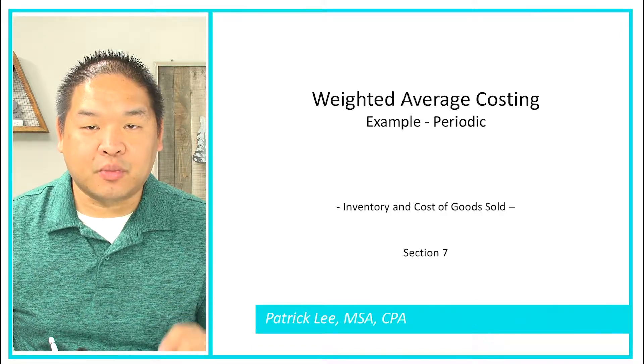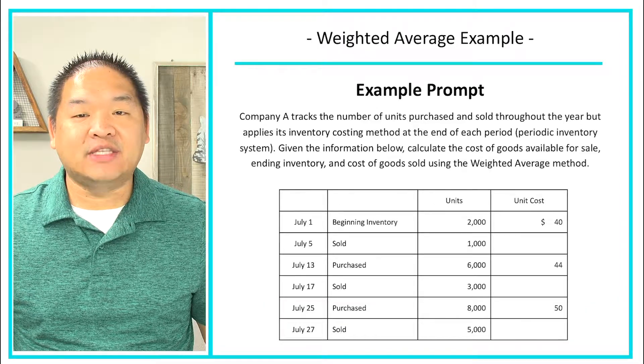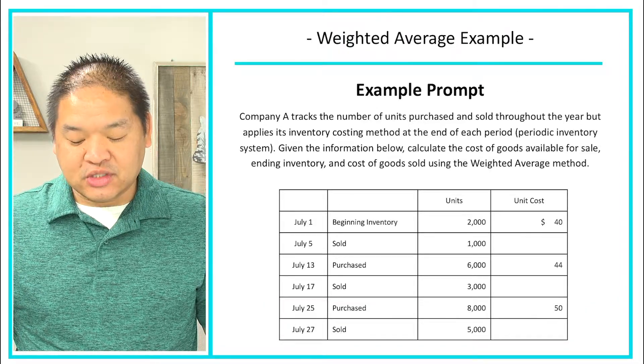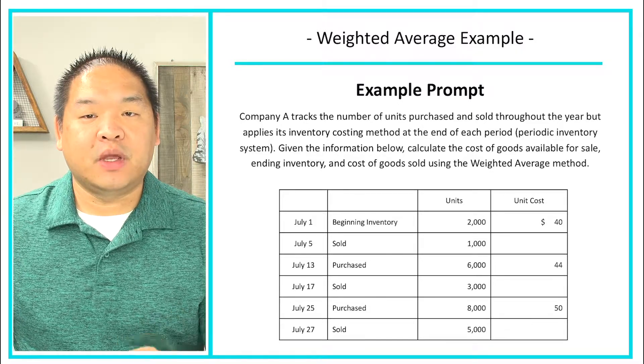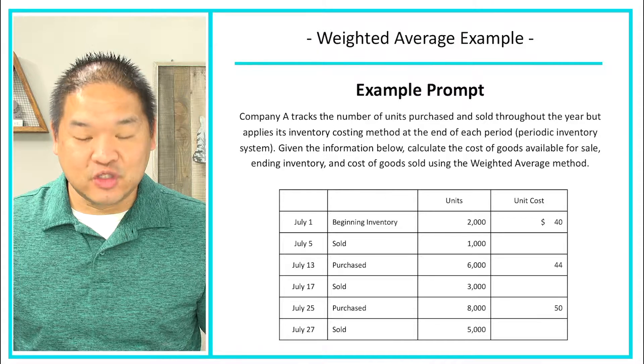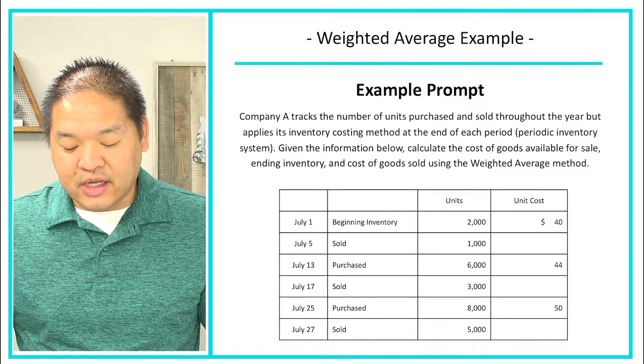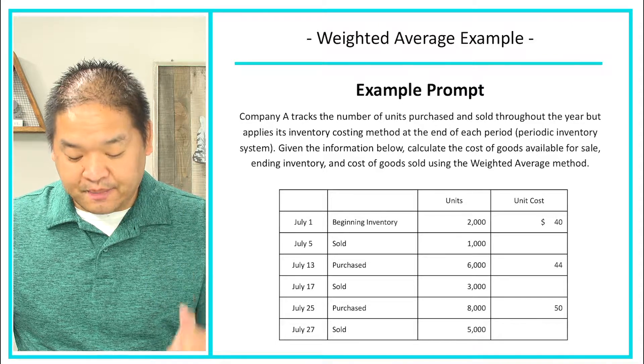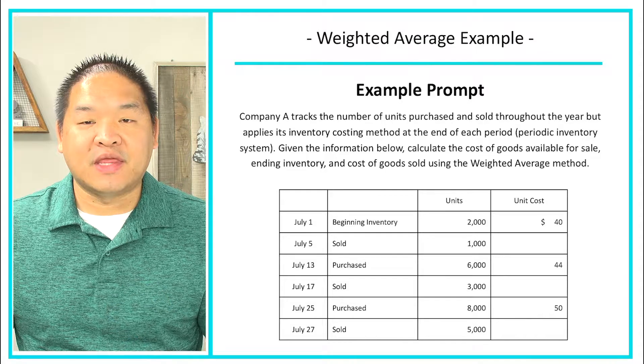So let's get started with the example prompt for our weighted average example. Company A tracks the number of units purchased and sold throughout the year but applies this inventory costing method at the end of each period, hence the periodic inventory system. Given the information below, calculate the cost of goods available for sale, ending inventory, and cost of goods sold using the weighted average method.